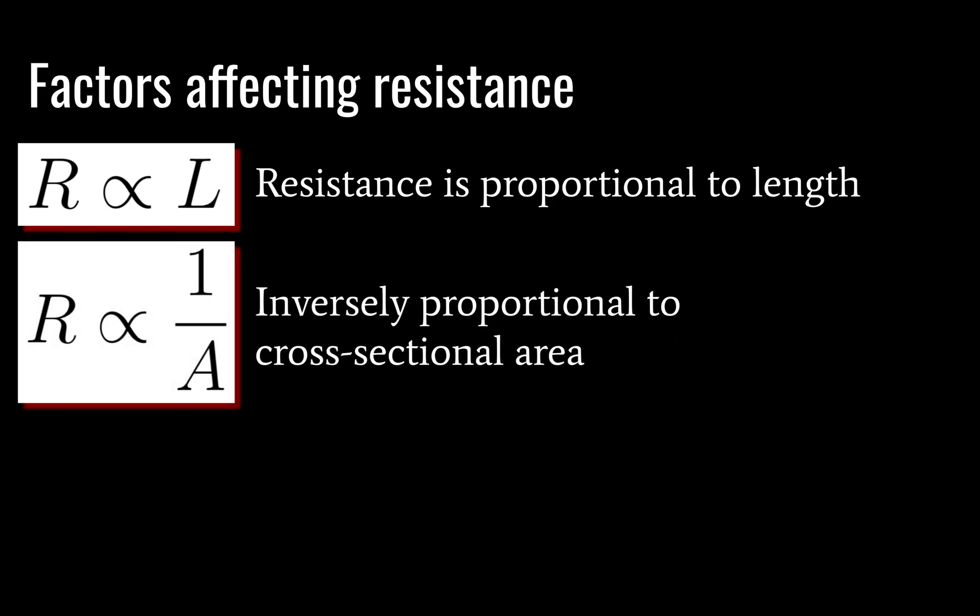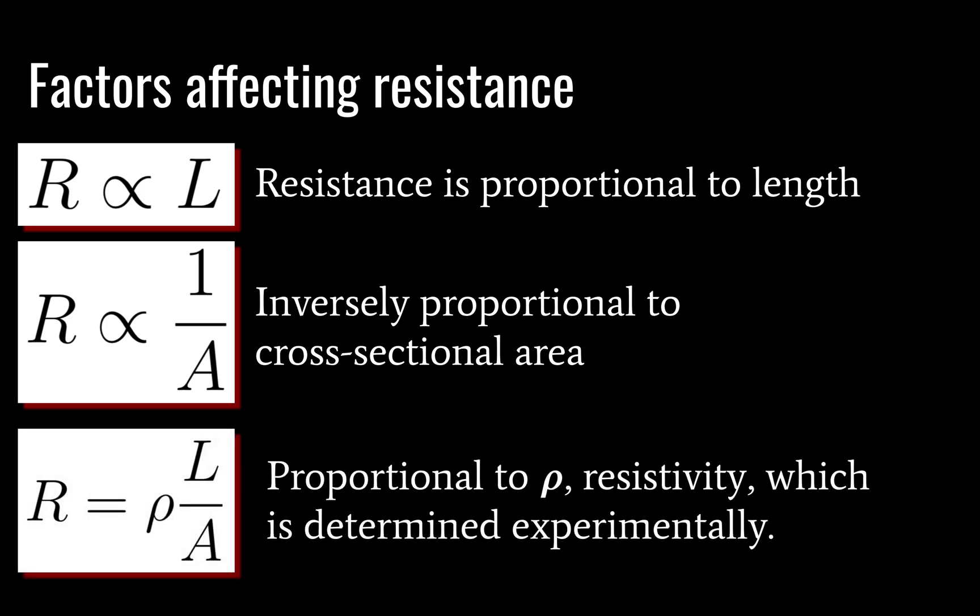Resistance is inversely proportional to cross-sectional area. You can think of this like automobile traffic — many Japanese streets are very narrow and cars can't go very fast, but out on the freeway you can go a lot faster and you're less likely to run into things. It's the same with electricity: as your cross-sectional area increases, your resistance will decrease. Finally, resistance is proportional to rho, which is resistivity. This is determined experimentally and will vary depending on the material — for example, copper will have a specific value for rho that differs from nickel or carbon fiber.